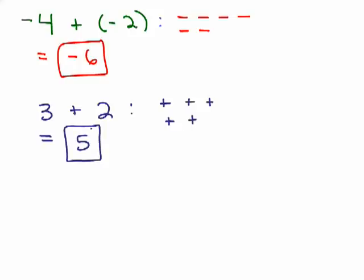In these two examples — negative 4 plus negative 2, and 3 plus 2 — I'm adding numbers that have the same signs. They're both negative, so you're just going to have a bigger negative number. You've got 4 negatives and 2 more negatives, so if you add 4 and 2 you're going to have 6 negatives. Mathematically we say you're adding their absolute values, since the absolute value of negative 4 is 4 and of negative 2 is 2. Visualize it: 3 positives and 2 more positives, so you add the 3 and 2.